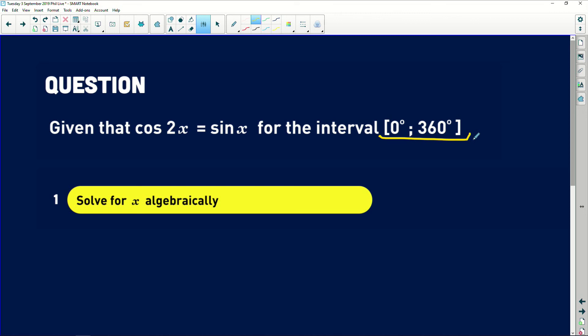First it says solve for x algebraically. So what we need to look at here is do we have the same trig ratio? No we don't. So how do we get them in terms of the same trig ratio so that we can equate the angles?